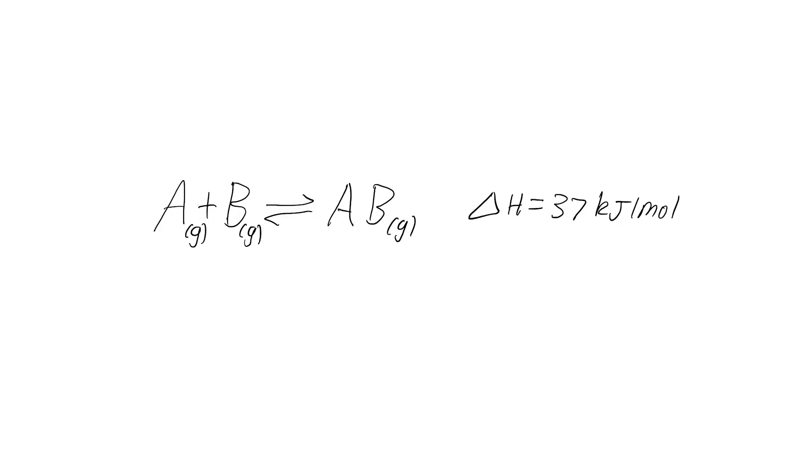First, let's change the concentration. Say that we add a whole bunch of the reactants A and B. By Le Chatelier's principle, the system will want to shift in equilibrium to minimise that change — in this case, to minimise the concentration of reactants A and B. The best way to do that is to shift the equilibrium to the right-hand side towards the products. This will decrease the concentration of A and B and increase the concentration of AB.